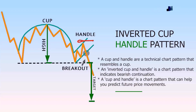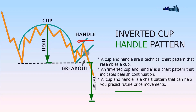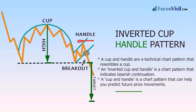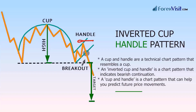The handle may also take the form of a triangle. The handle needs to be smaller than the cup, and the handle should not drop into the lower half of the cup — ideally it should stay in the upper third. For example, if a cup forms between $99 and $100, the handle should form between $100 and $99.65. If the handle is too deep and it erases most of the gains of the cup, then avoid trading the pattern.